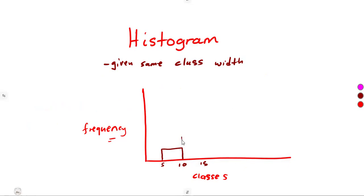From 10 to 15, we are going to have another bar corresponding to its frequency, continuously like that. No gaps. And as you can see, because of the same class width that we had, we are going to notice that these bars will be exactly of the same width. It will be the same throughout.